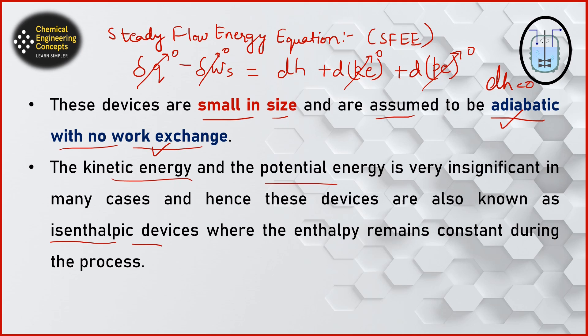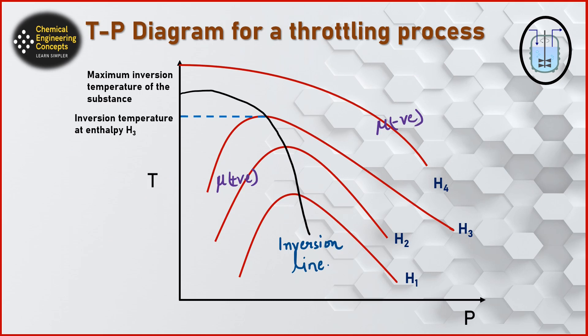Hence the throttling process simplifies to dH = 0, meaning it is a constant enthalpy process — also called an isenthalpic process. Throttling devices are therefore known as isenthalpic devices, where enthalpy remains constant during the process. As I told you about the Joule-Thomson coefficient, the change in pressure results in a change in temperature, and all of this happens at constant enthalpy.